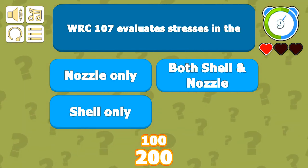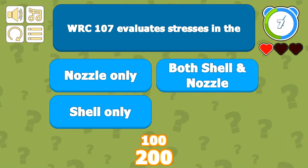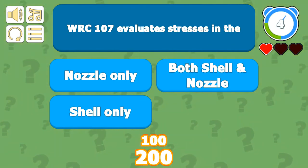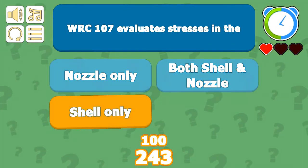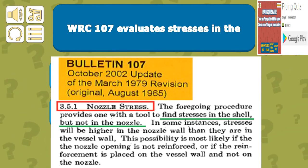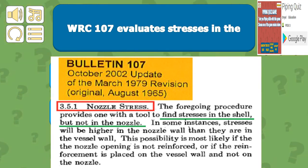WRC 107 evaluates stresses in the shell only, while WRC 297 evaluates stresses in both the shell and the nozzle. The foregoing procedure provides a tool to find stresses in the shell but not in the nozzles.